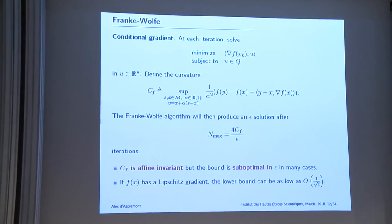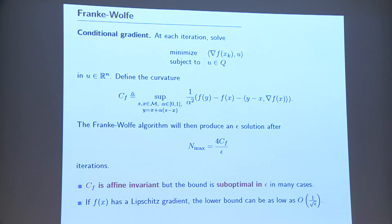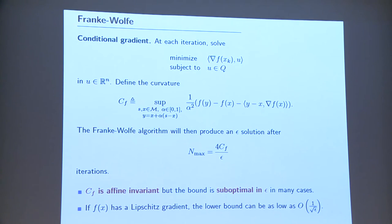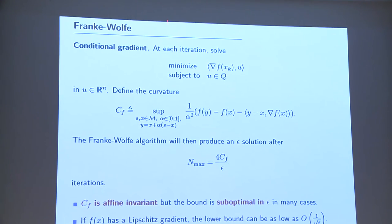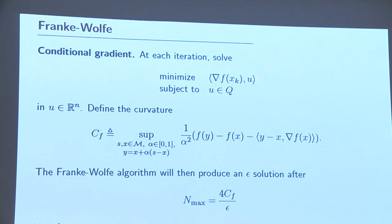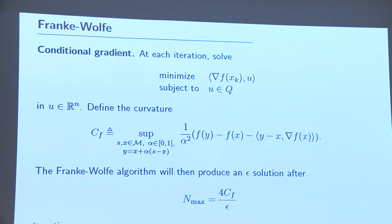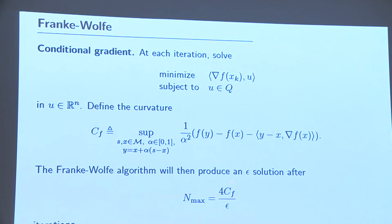The answer is yes in certain cases. Looking at Frank-Wolfe — also known as the conditional gradient method or the Fedorov method — at each iteration you solve a linear minimization problem whose vector is given by the gradient, you get an extreme point of the feasible set, take convex combinations of these extreme points, and magically converge to the optimum.